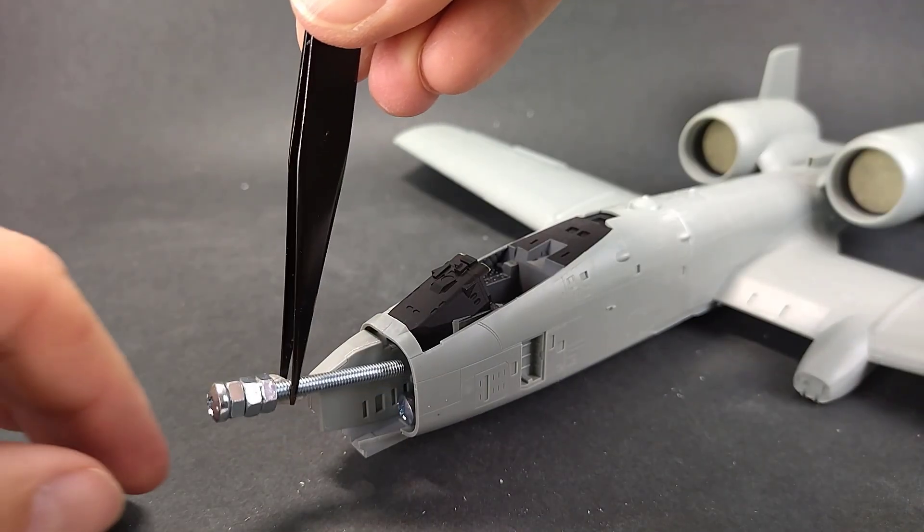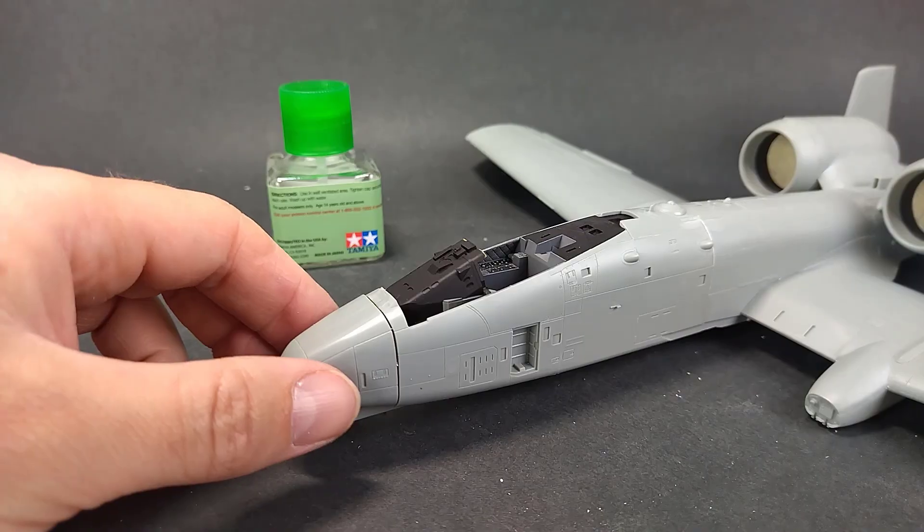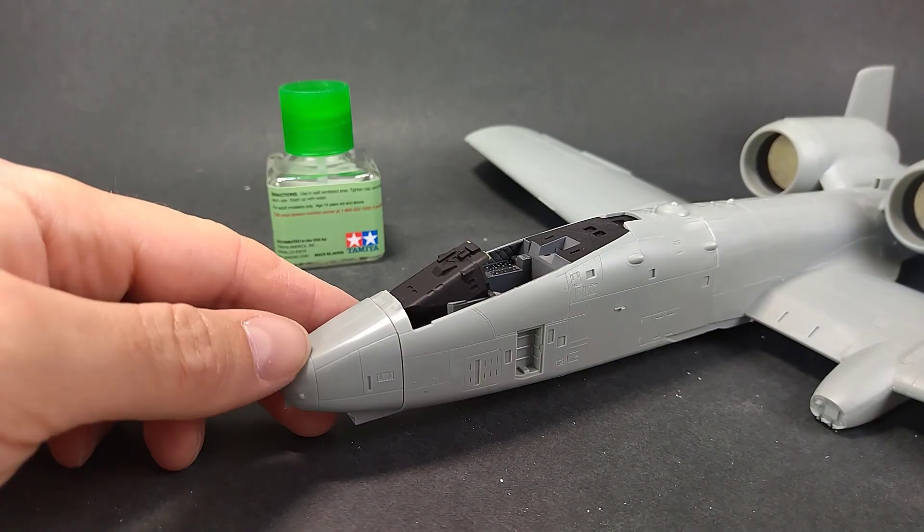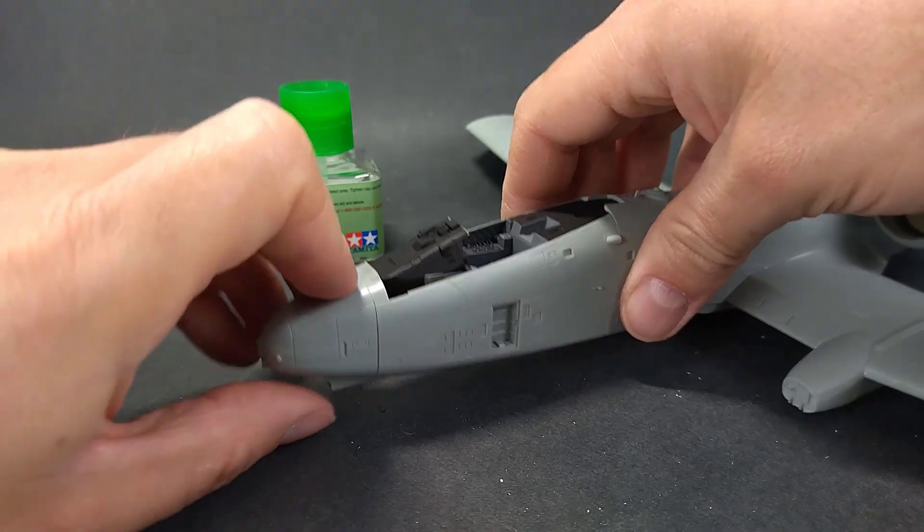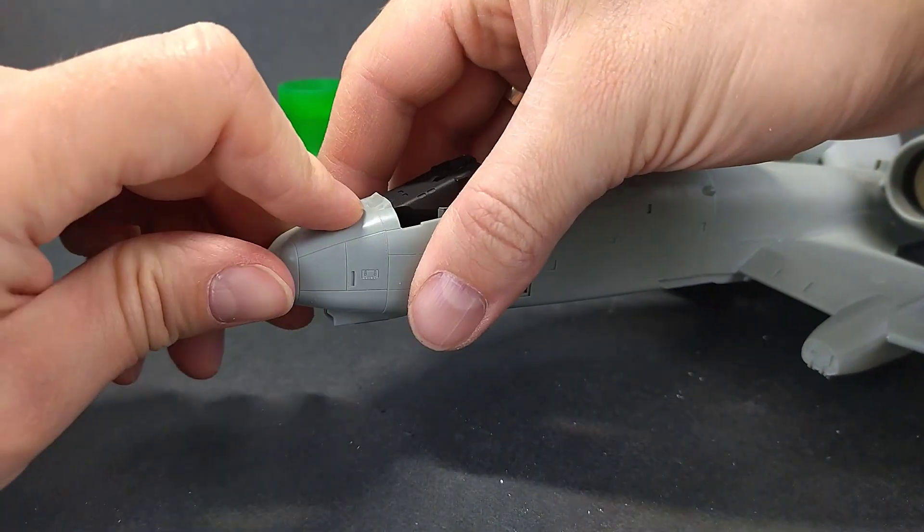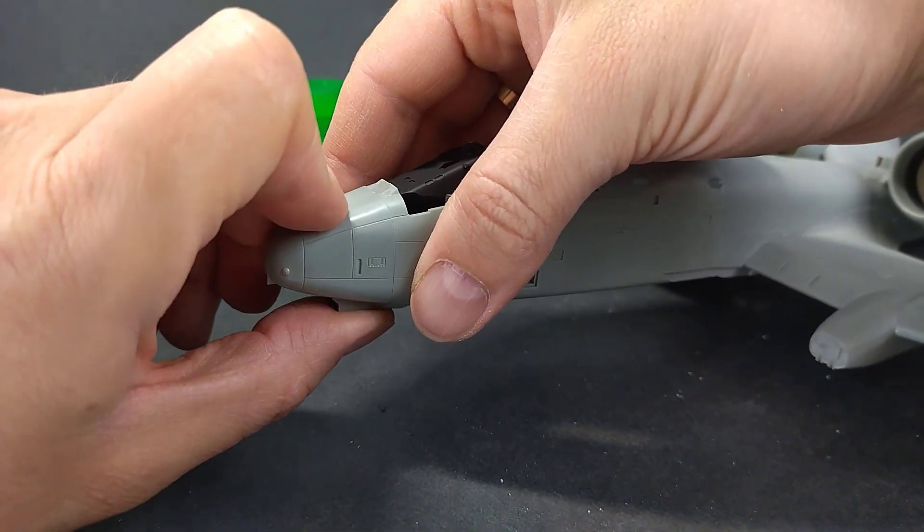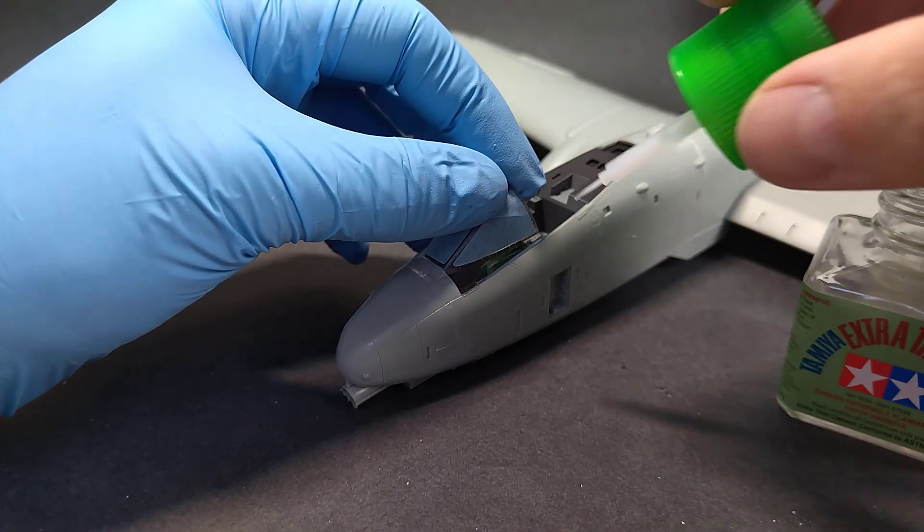This is how I added nose weight. Because I replaced some plastic parts in the engines with heavier resin, I added more weight to the nose than instructed, just to make sure the model stands on three wheels.